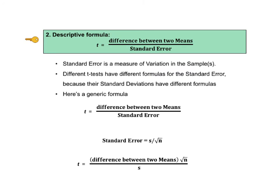Here is a descriptive generic formula for t. t is the difference between two means divided by the standard error. The numerator is straightforward enough, but what is the standard error? Standard error is a measure of variation of the samples. See the standard error article in the book or the upcoming video for more information.